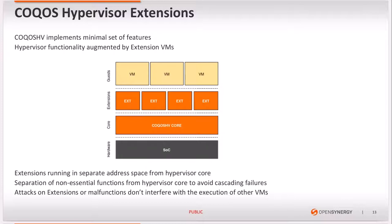This separation of functionality avoids cascading failures, as attacks on extension VMs or malfunctions in extension VMs do not interfere with the execution of other guests or the hypervisor itself. Hypervisor Extensions are an important concept as they allow the hypervisor to preserve its small TCB and provide high flexibility and modularity, allowing users to pick extensions to tailor hypervisor functionality to match their use case.